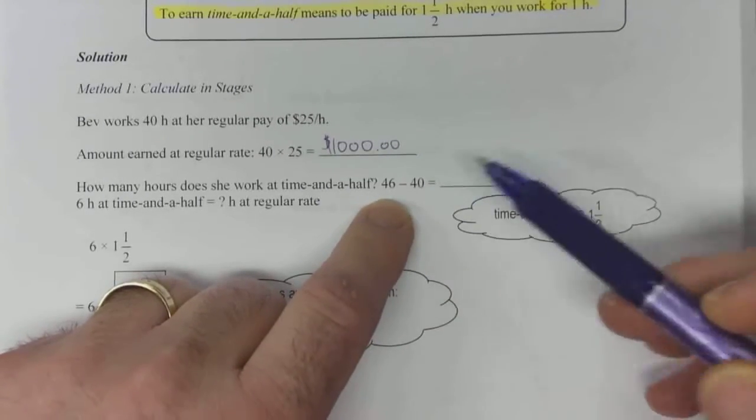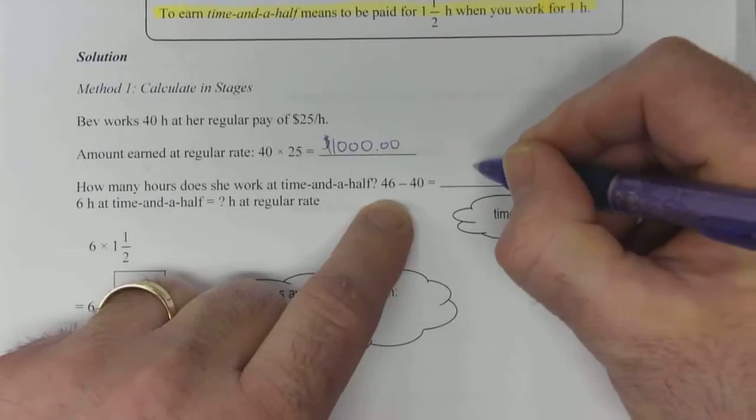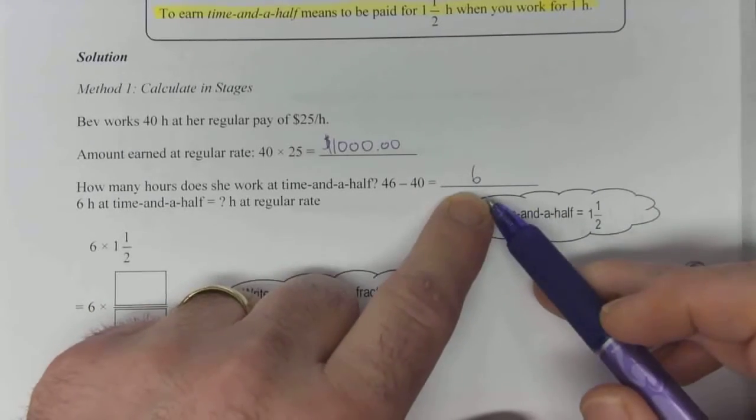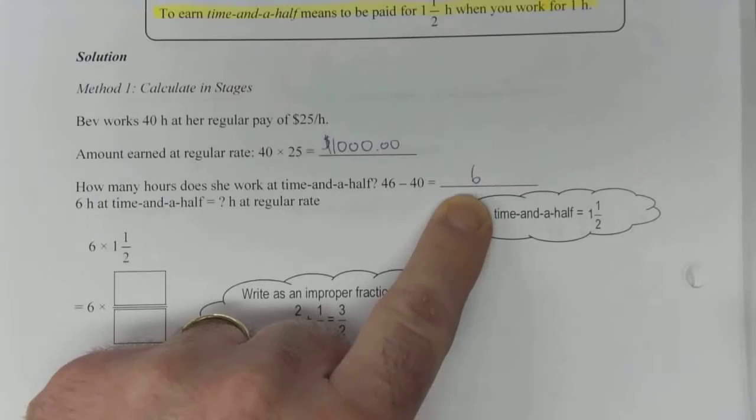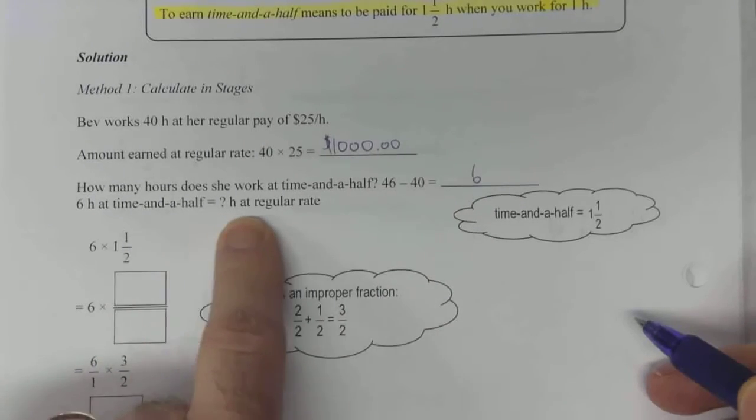So we subtract the 40 from that. 46 minus 40 gives you six hours. So at six hours, she's paid at that time and a half rate.